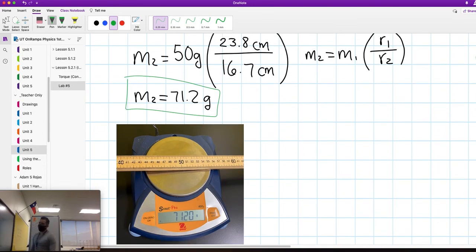Remember, there's a little bit of uncertainty, which is fine. That's how you can find the mass of your meter stick ruler, whatever you're doing the experiment with. That's it, bye.